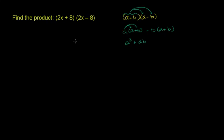We have positive ab and negative ab, so these cancel out to zero. This leaves us with a squared minus b squared.